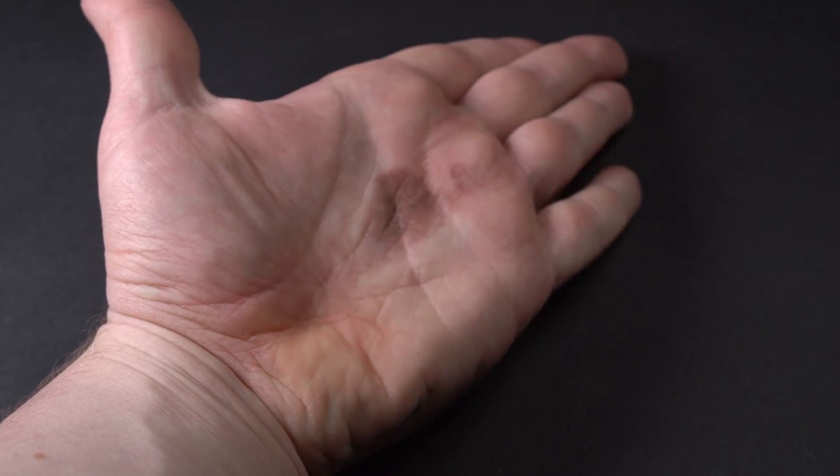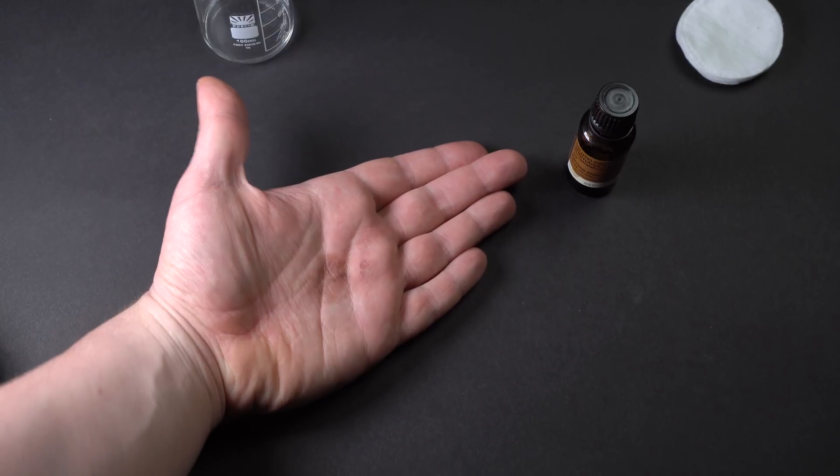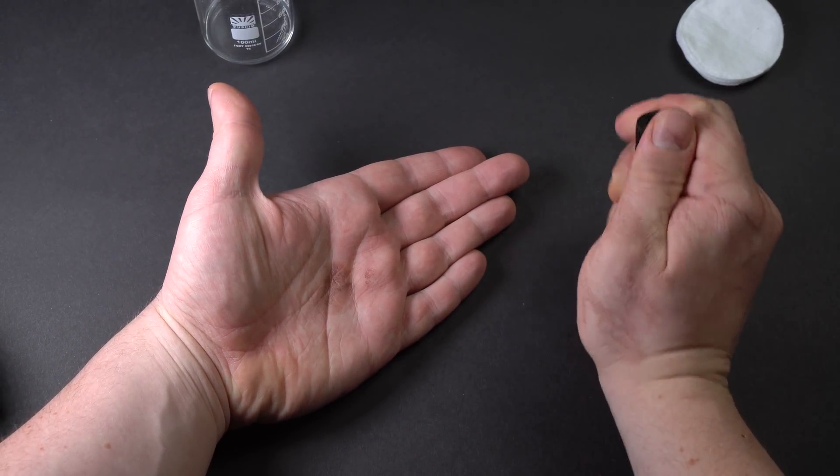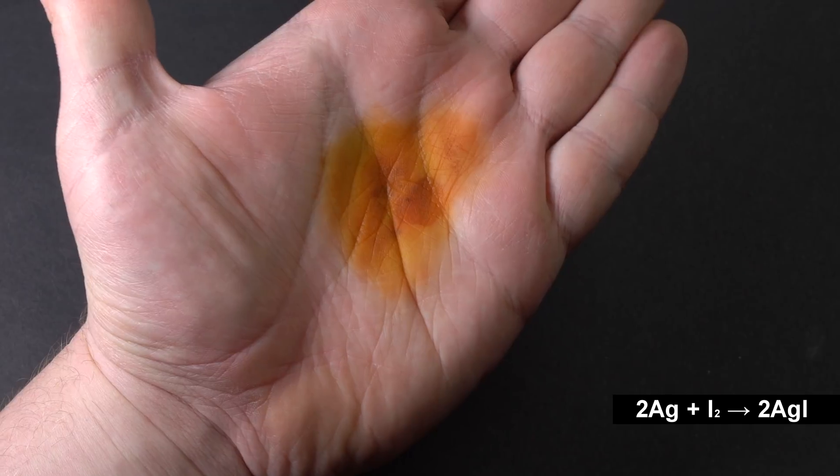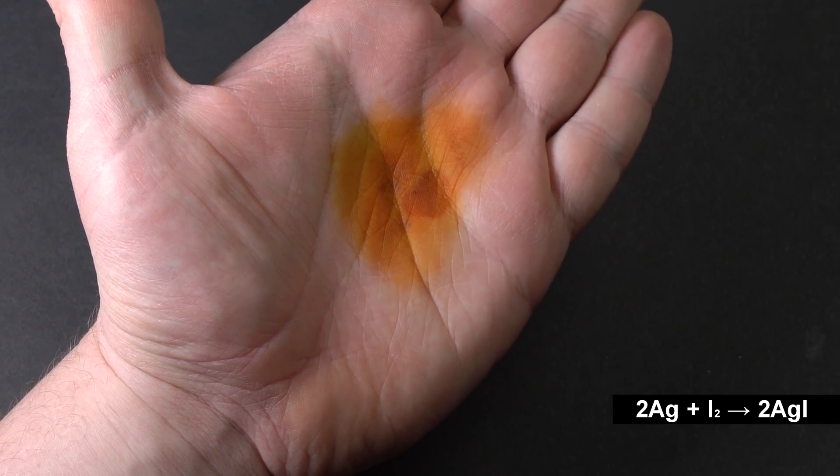That is why it's better to resort to one chemical way of removing them. First you need to wipe the stain with a cotton pad soaked in the iodine solution in order for iodine to react with silver particles and form silver iodide.